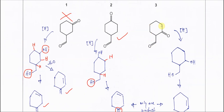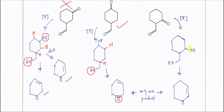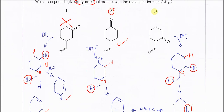For the last compound, this ketone reduces to a secondary alcohol and this aldehyde reduces to a primary alcohol. After dehydration, this OH is removed with this H to form a C=C double bond. The other OH has no choice but to remove with this H, forming another C=C double bond. So it also forms only one product. Therefore the answer is compounds 2 and 3.